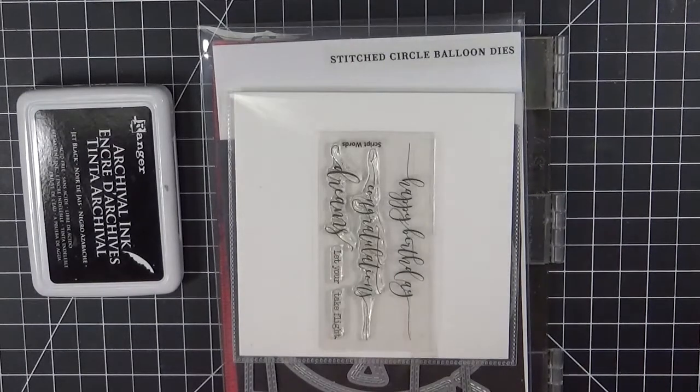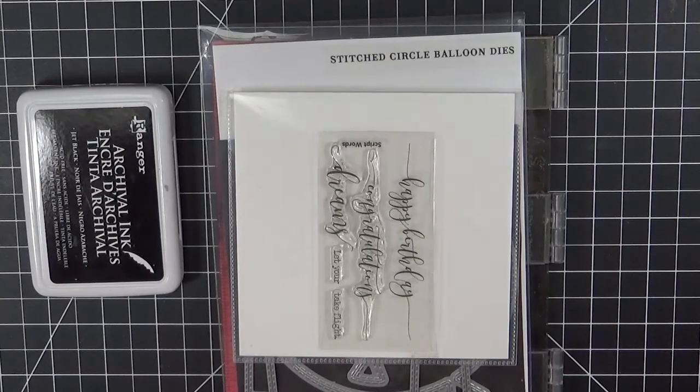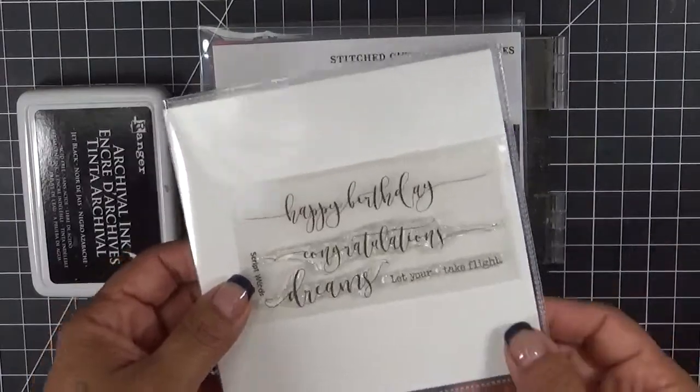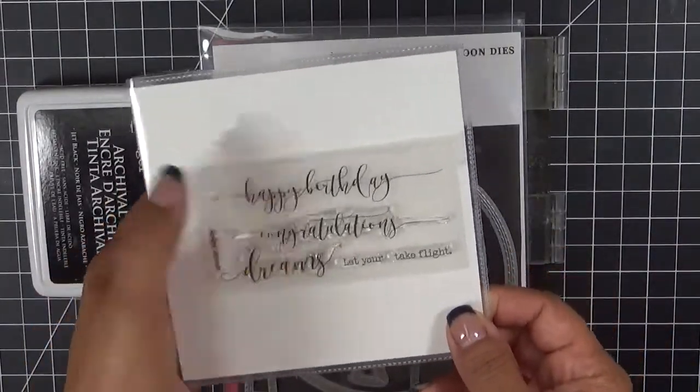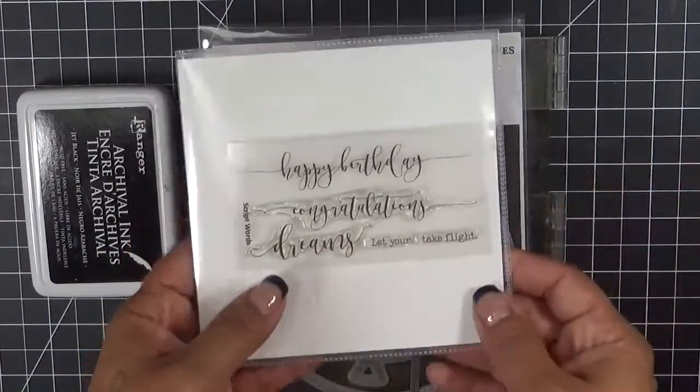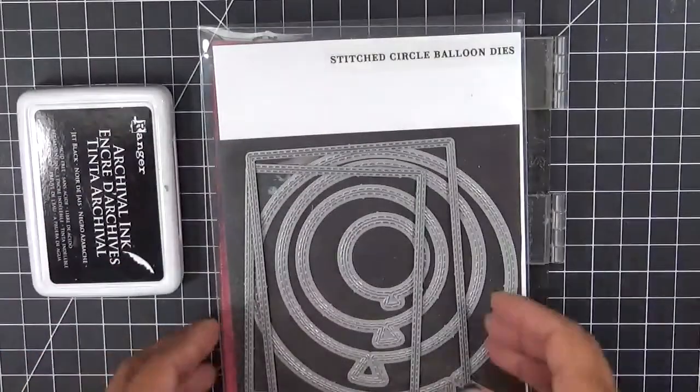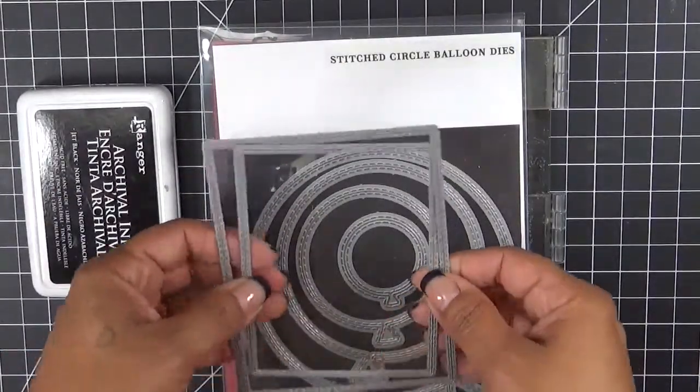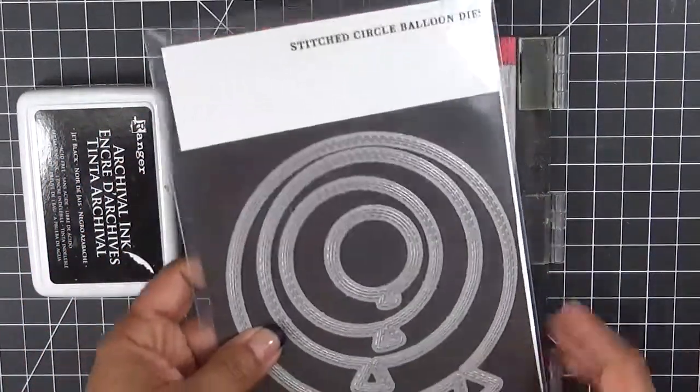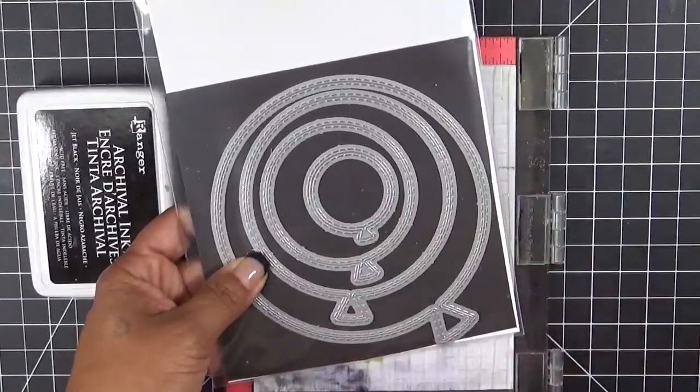So we figured this would be perfect if we haven't mailed something to someone that needs something. I needed a happy birthday card. So what I'm using today, I'm using this stamp set called Script Words. This is just one of the smaller sets that I have. One says happy birthday, congratulations, and then let your dreams take flight. Then I'm using my little More Stitch Rectangulars dies. I'm using two of them from that. Then I'm using my Stitched Circle Balloon dies, and I'm using the smaller one in this set.